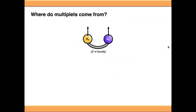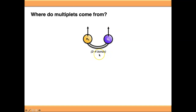So where do multiplets arise from? This links back to the theory. We have a proton HA connected somehow to proton HB — usually through 2 to 3 bonds, though there are rare occasions of 4-bond coupling, it's not commonplace. Most couplings go through 2 to 3 bonds.